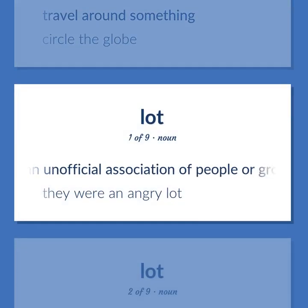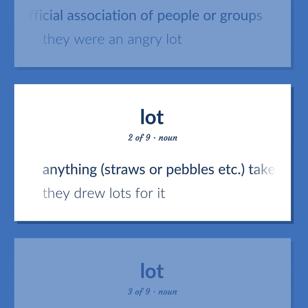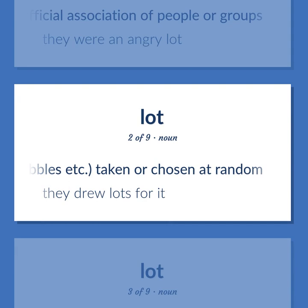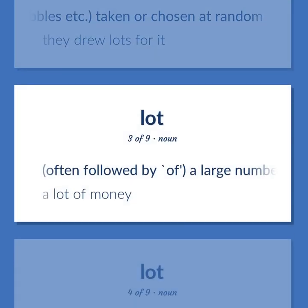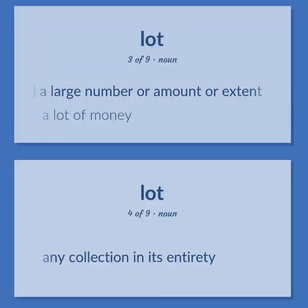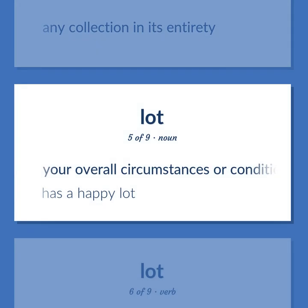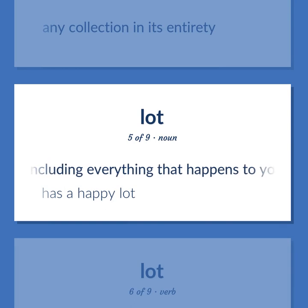An unofficial association of people or groups. They were an angry lot. Anything — straws or pebbles, etc. — taken or chosen at random. They drew lots for it. Often followed by a large number or amount or extent. A lot of money. Any collection in its entirety. Your overall circumstances or condition in life, including everything that happens to you. Has a happy lot.